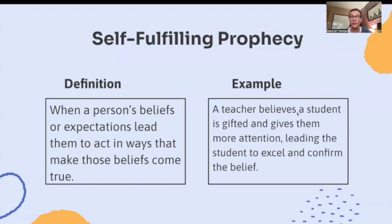Self-fulfilling prophecy is when a person's beliefs or expectations lead them to act in ways that make those beliefs come true. For example, a teacher believes a student is gifted and gives them more attention, leading the student to excel and confirm the belief.